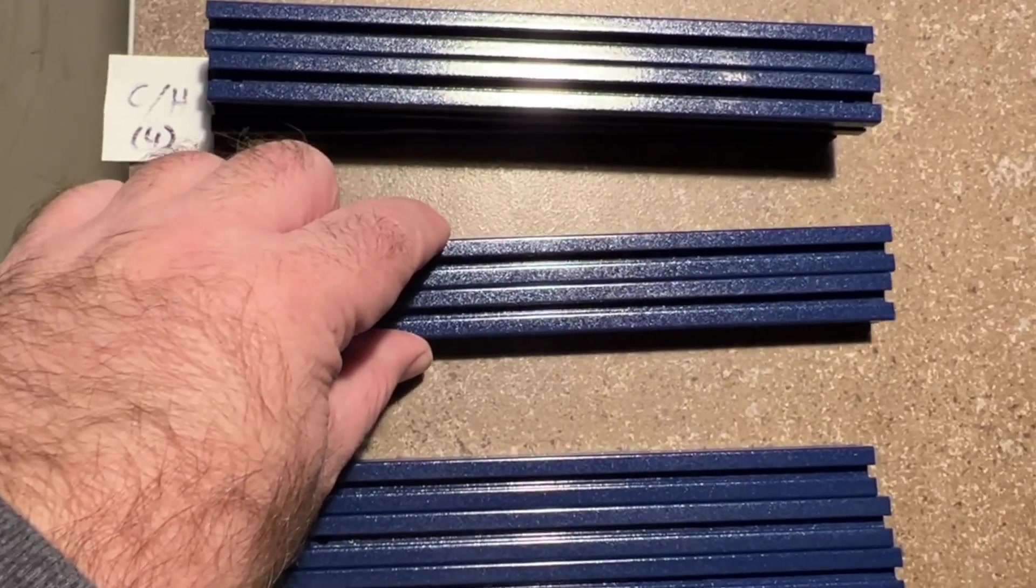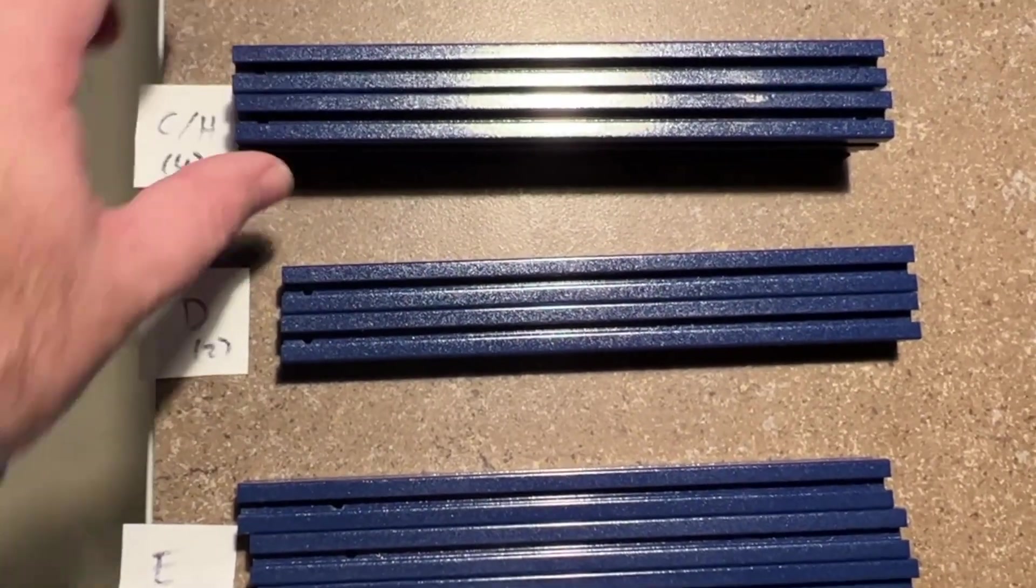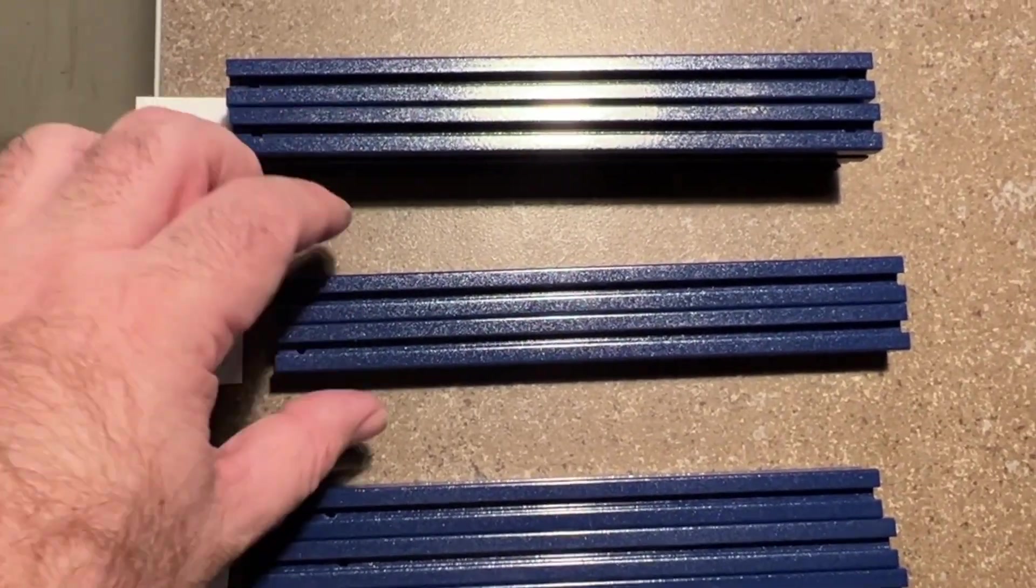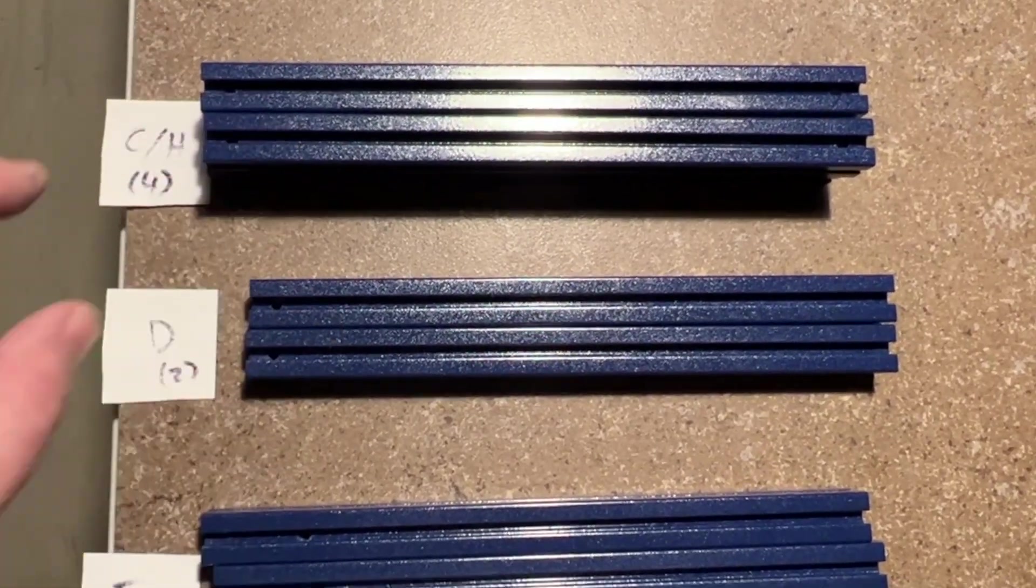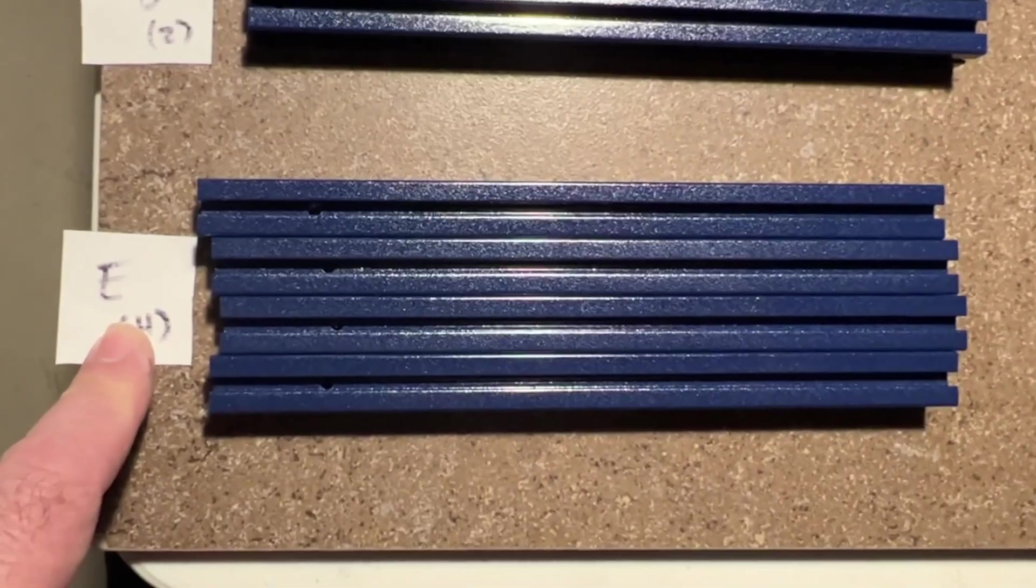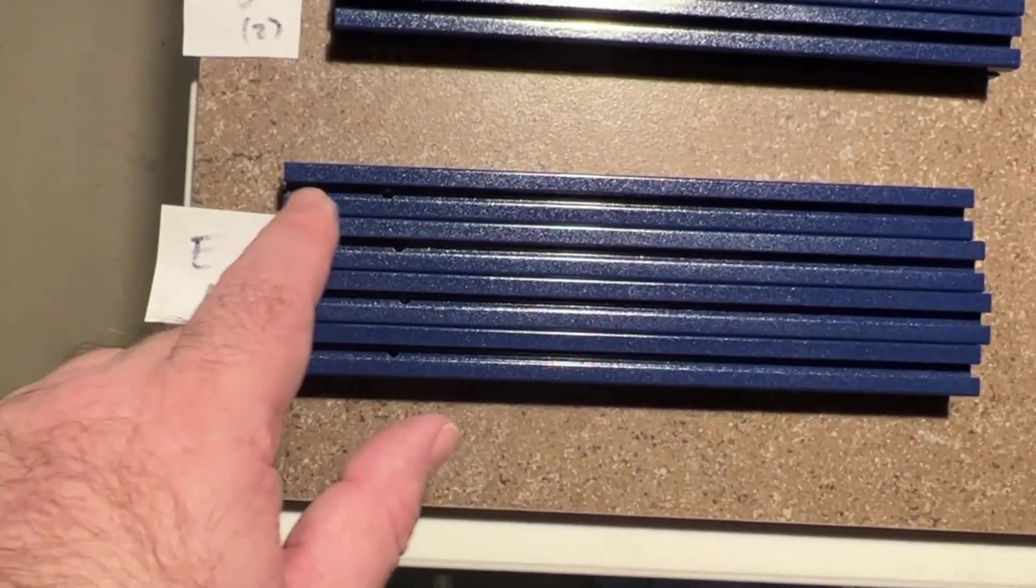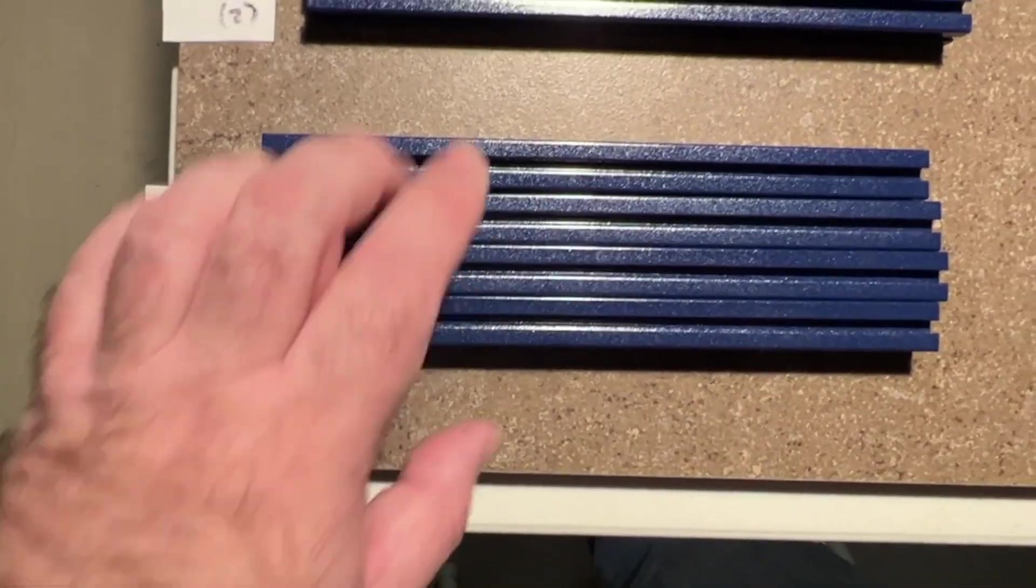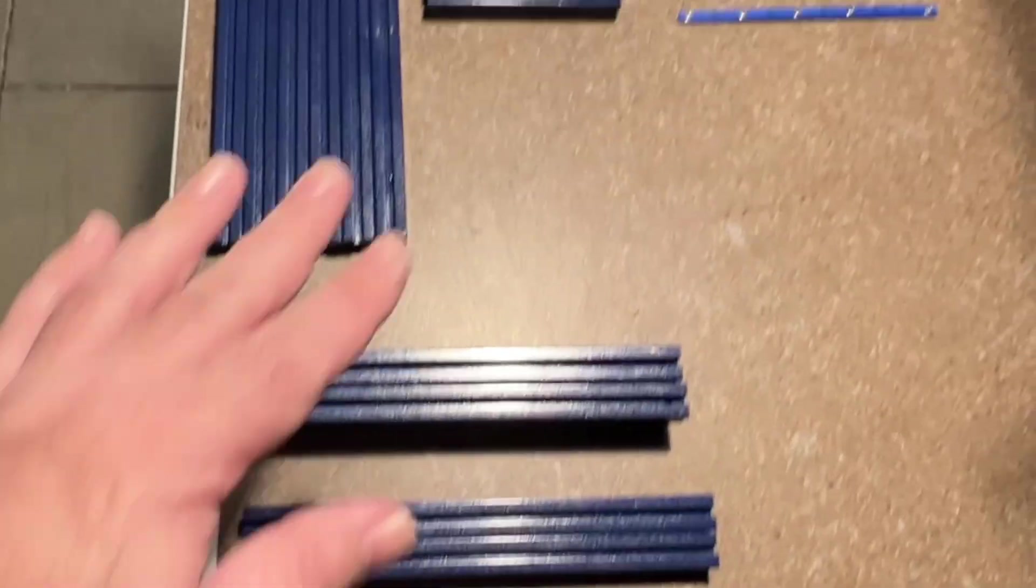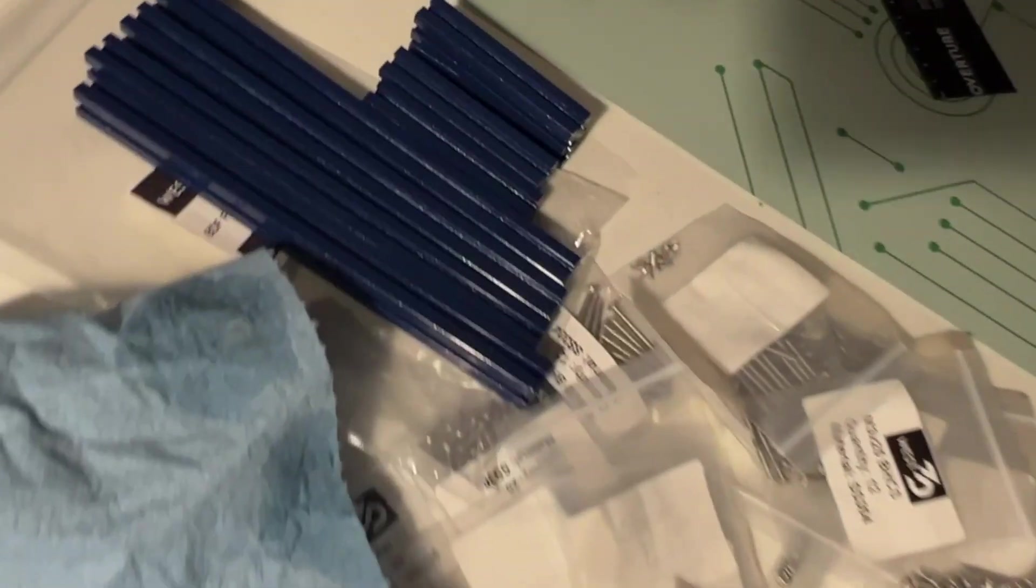I think on my first build I accidentally used a D one where I needed a C. So that's a pretty common mistake. Make sure you don't do that. Then we've got our E extrusions which have the distance here with one hole on them. This does not include the top hat extrusions. I've set those aside over here.